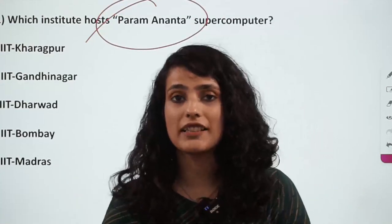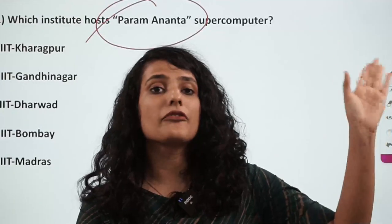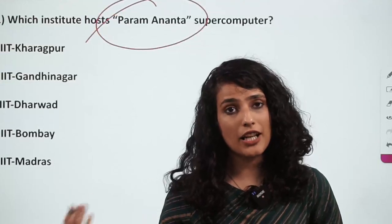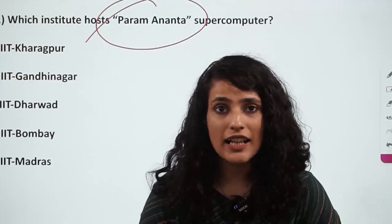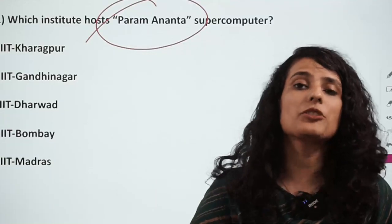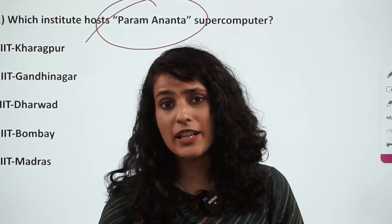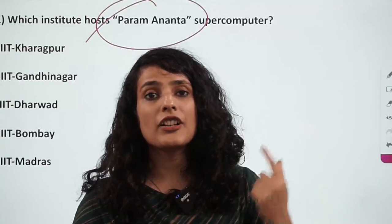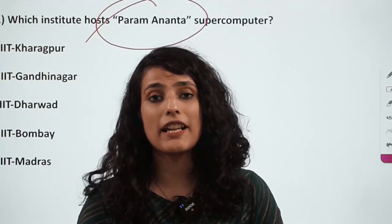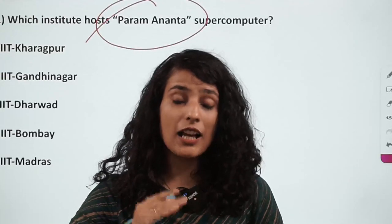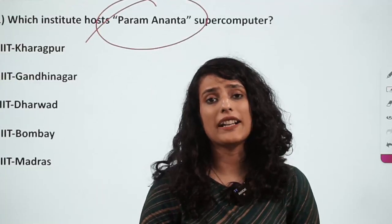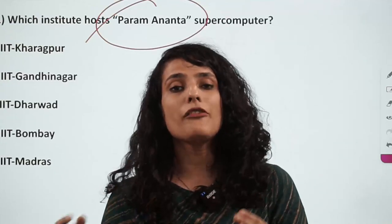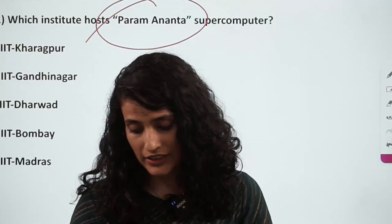In 1988, CDAC ko established kiya gya tha. The background story is that India ko Kray Supercomputer chahiye tha. The Kray Supercomputer was with the US and US refused to sell it to India, because of the apprehensions that India may use that facility to develop nuclear weapons. So what did India do? In 1987-88, CDAC was established with the motto to start developing supercomputers for our country, with some support from European countries such as Netherlands.